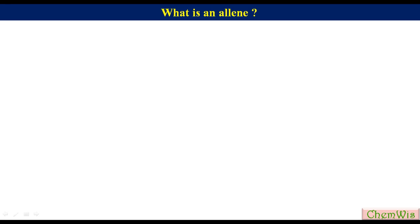Let's start with the first point: what is an allene? An allene is a compound in which a carbon atom has double bonds with each of its two adjacent carbon atoms. The simplest molecule of this class is propadiene, which is also called allene. The HCH planes are perpendicular to each other — that is, the dihedral angle between the two HCH planes is 90 degrees.